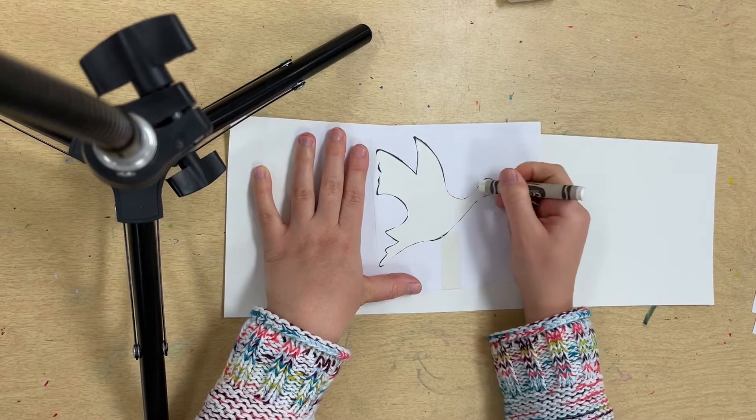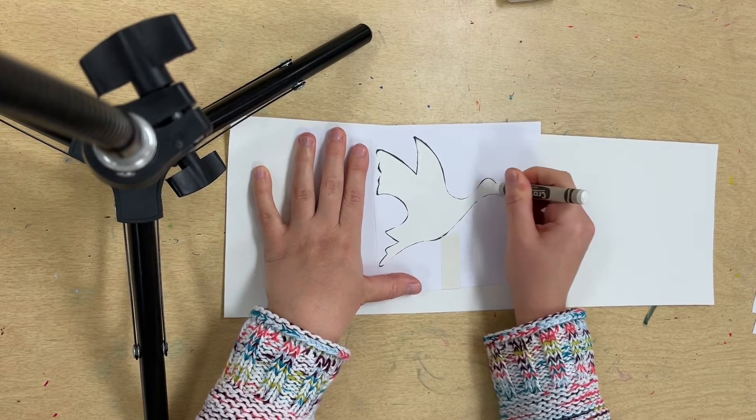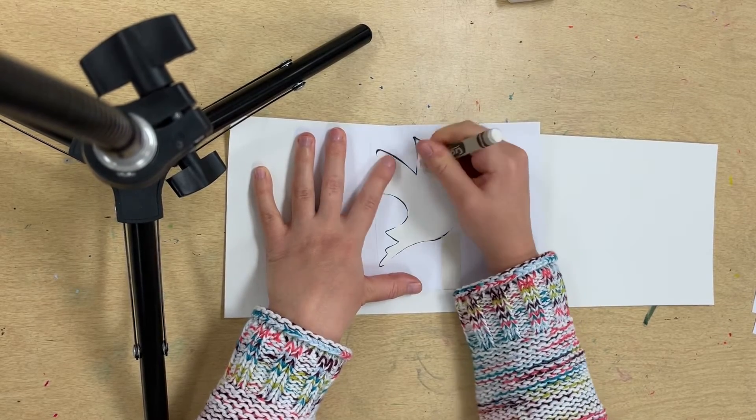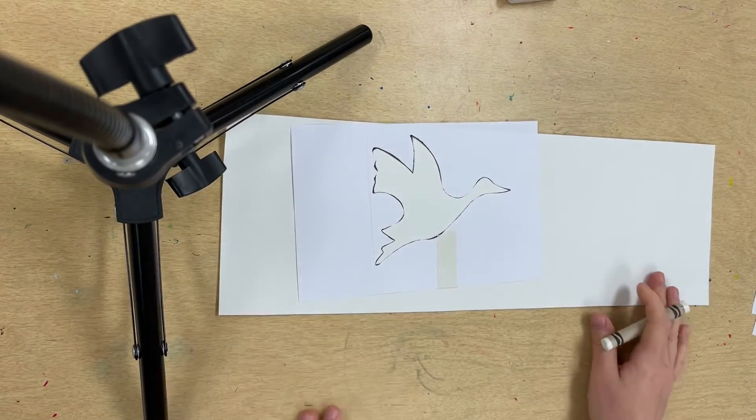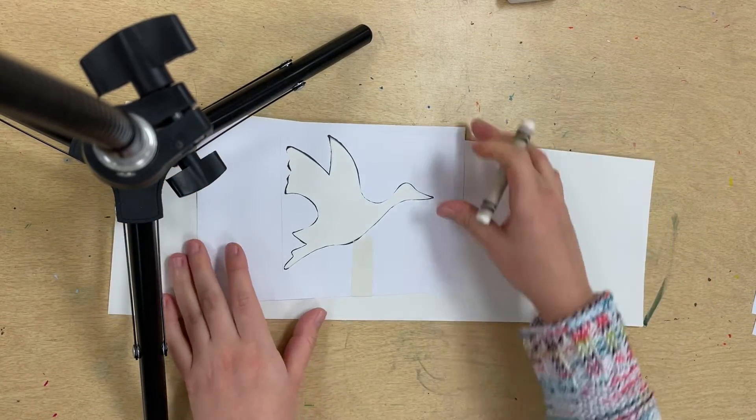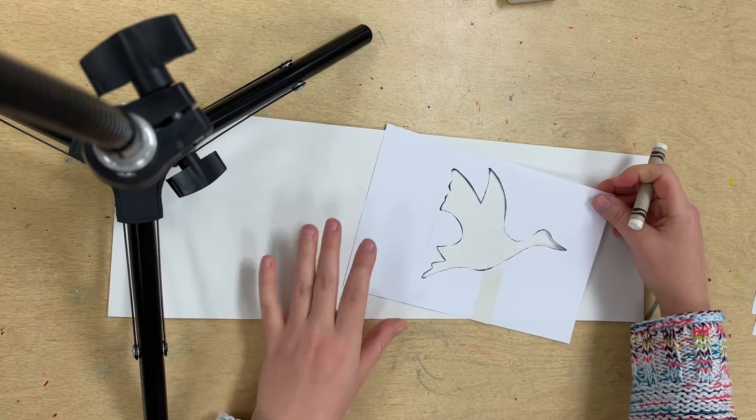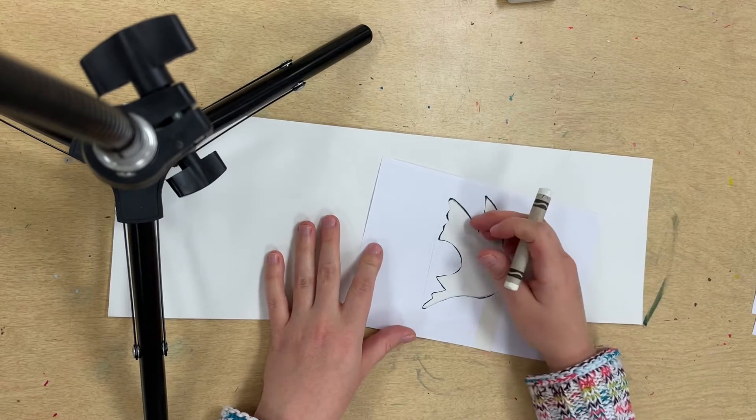Again, I'm coloring within my stencil with the white crayon. I'm pressing hard so that it does show up eventually. It's hard to see, so I'm just making sure I do get every little part of my crane. I'm going to move my stencil again. Maybe I'll position it downward this time diagonally to show some movement.